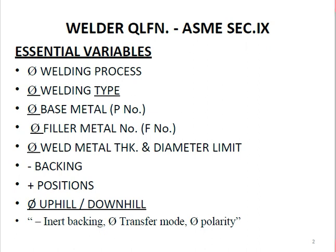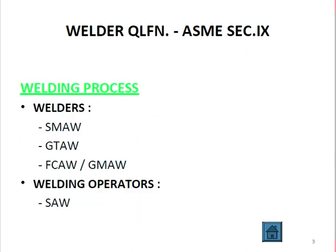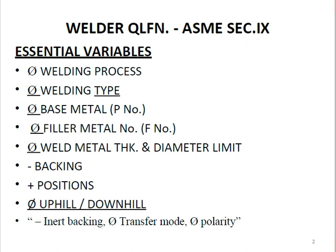If a welder is qualified with a set of essential variables and one of those variables needs to change — such as welding type or base metal — then the welder needs to de-qualify and re-qualify. For example, if the welding process changes from SMAW to GMAW, that welder must re-qualify because the welding process is an essential variable.